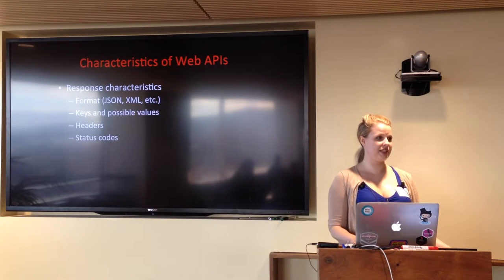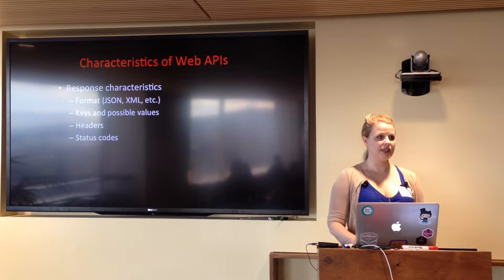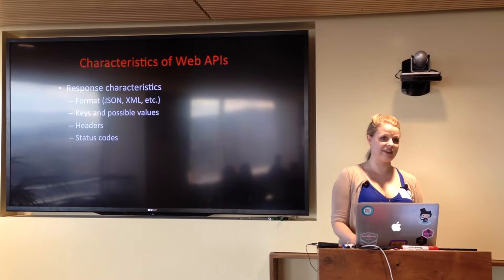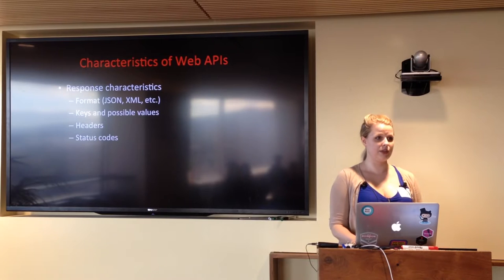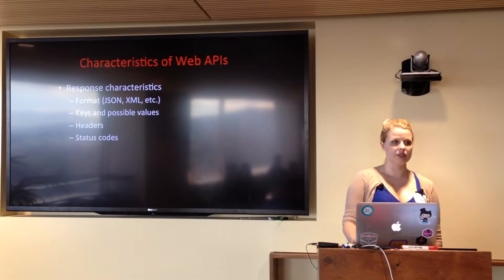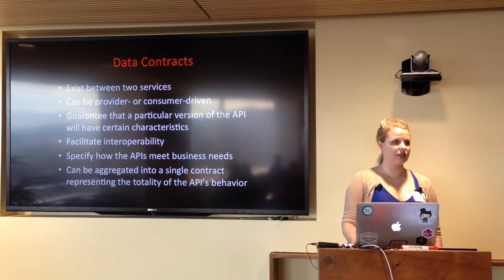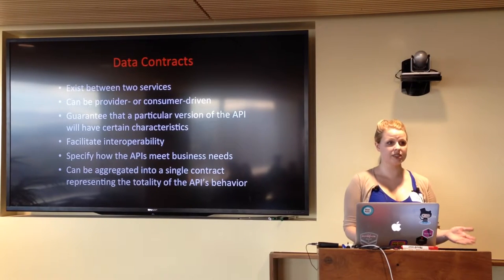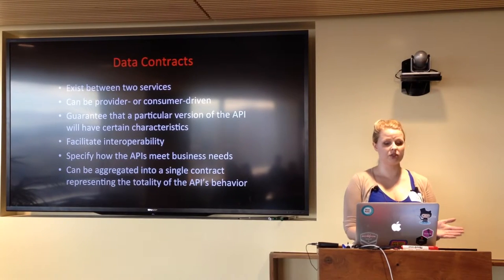Headers that the client can expect to receive, and status codes. If it's successful, maybe it will give back a 200. Maybe if it can't find the endpoint, a 404. What those status codes are and what leads to which status being returned is an important characteristic of a response. So a data contract is a contract between two services — a service and its client — that describes what those characteristics are expected to be and guarantees to the client that a particular kind of request will work to retrieve a particular kind of response.